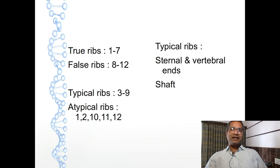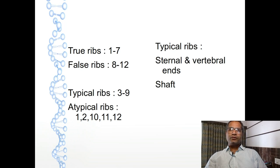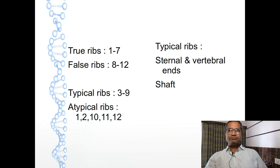The first classification is true ribs and false ribs. Ribs number 1 to 7 are true ribs and ribs number 8 to 12 are false ribs. A true rib is connected with both the vertebra and the sternum, with the sternum connected with the help of costal cartilage. False ribs are connected with the vertebra but are not directly connected with the sternum, with or without the help of cartilage.